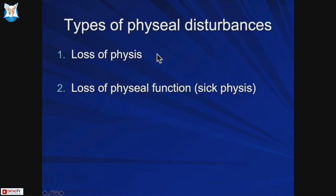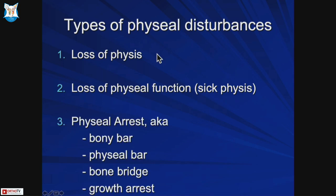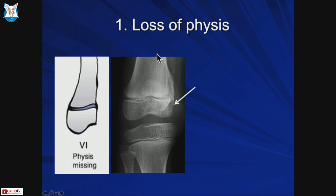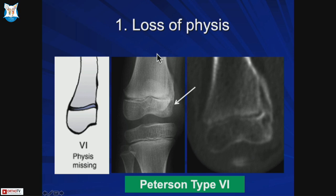Types of physeal disturbances include loss of physis, or a physis that appears intact but doesn't grow - called sick physis - and then physeal arrest. In the literature you'll see different names: bony bar, physeal bar, bone bridge, growth arrest - all meaning bone across the physis. You can have loss of physis like this patient with a type six modification.